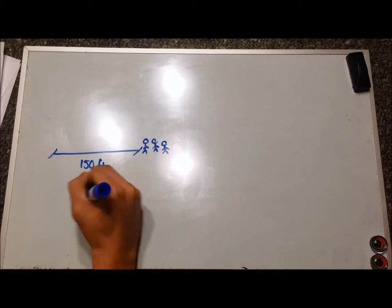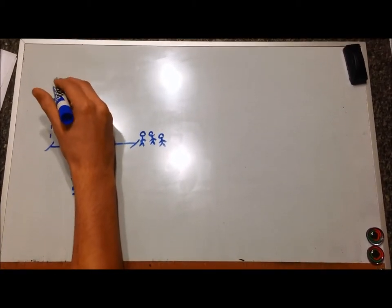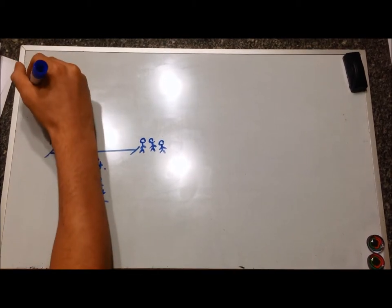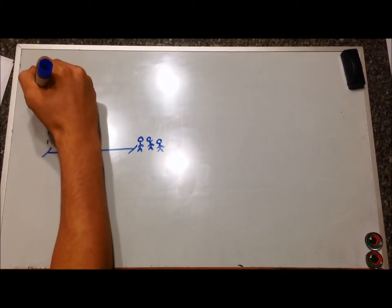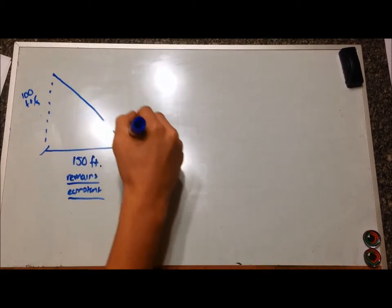The firework launches at a rate of 100 feet per second. This rate, too, remains constant. What we're going to try to find is the rate of change of the angle of elevation when theta is equal to 33 degrees.